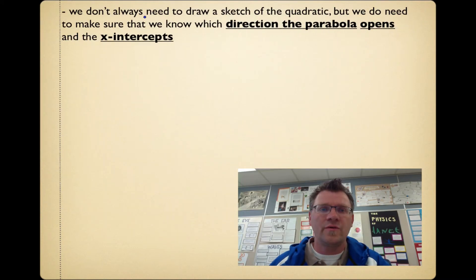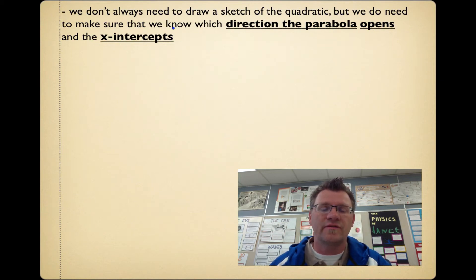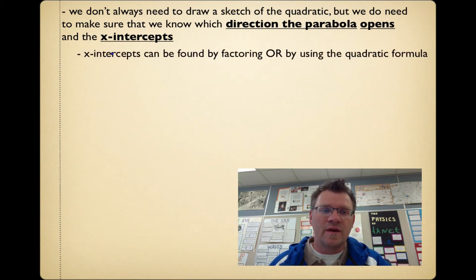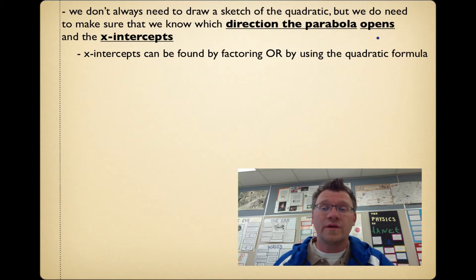We don't always need to draw a sketch of the quadratic, but we need to know which direction the parabola opens and we need to know the x-intercepts — that will help us determine how to solve each inequality. Remember that x-intercepts can be found by factoring, or if you need to, you can use the quadratic formula, and sometimes you'll have to.